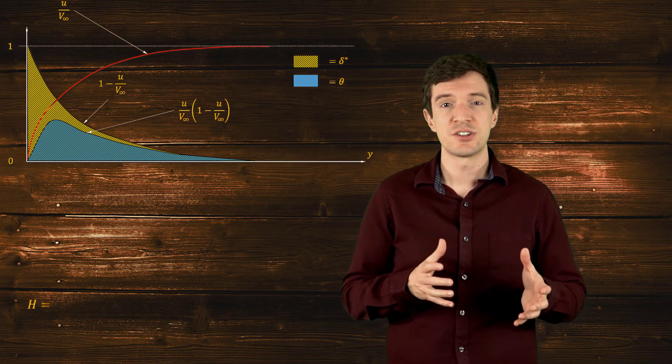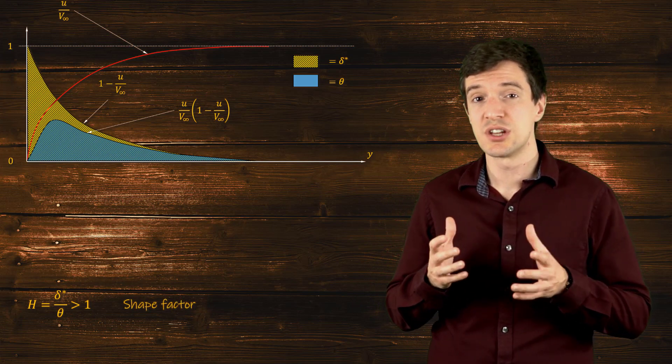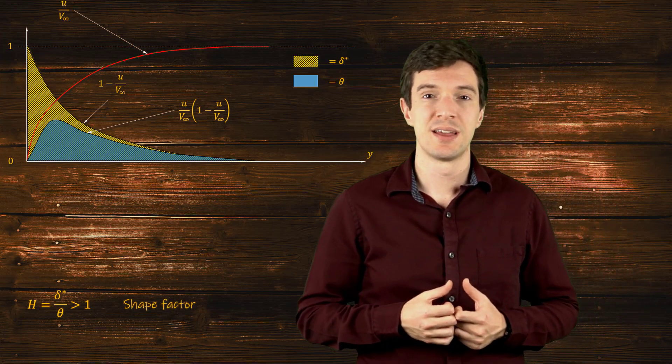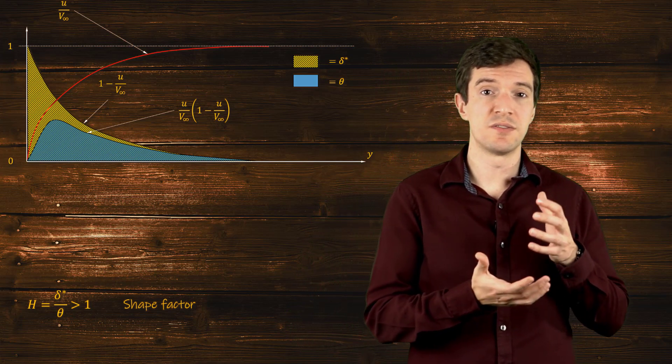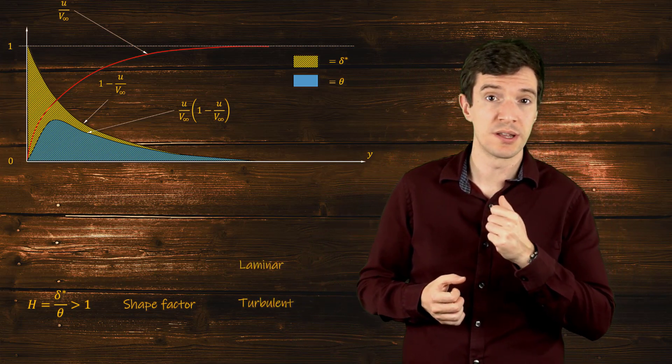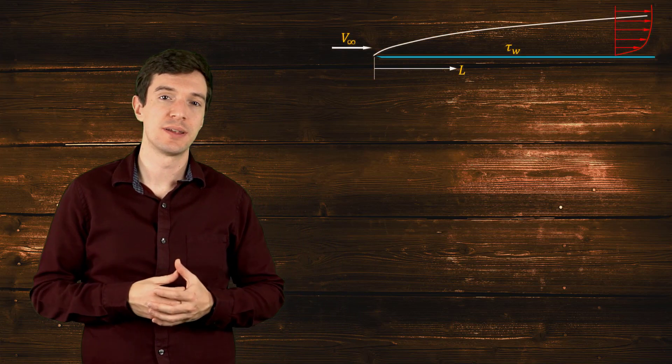The ratio of these two terms is typically referred to as the shape factor. And this parameter can be used to identify if the boundary layer is laminar, turbulent, or if we have separation. The main point of the integral analysis of the boundary layer is to estimate the friction and drag acting on the plate.